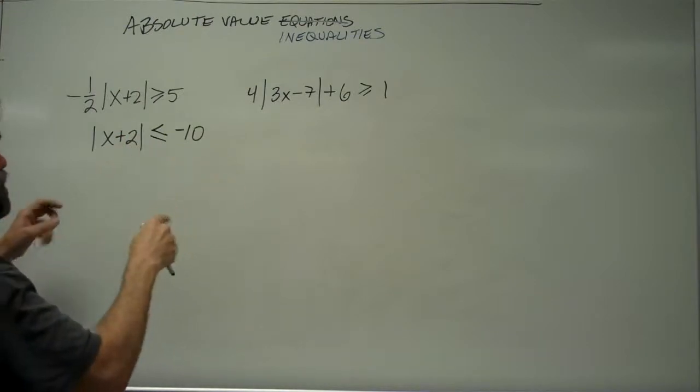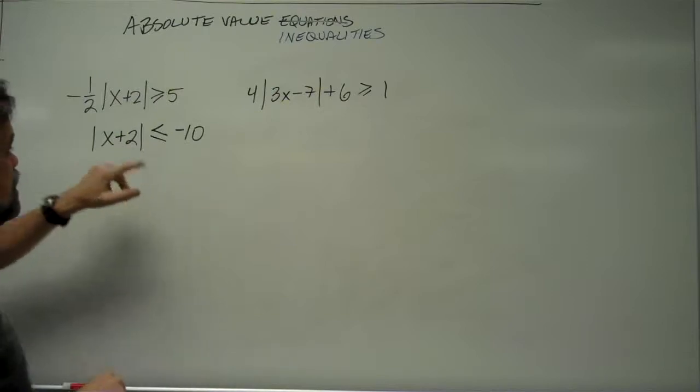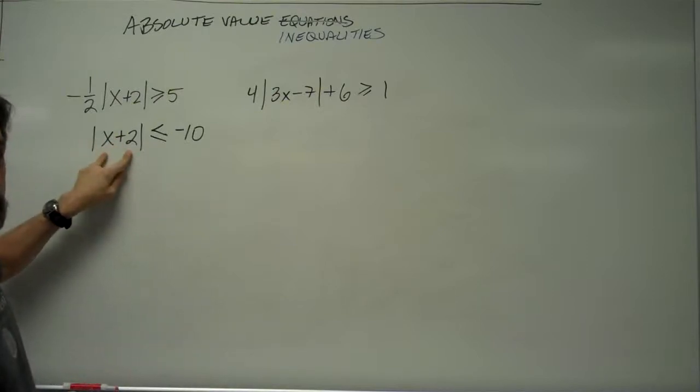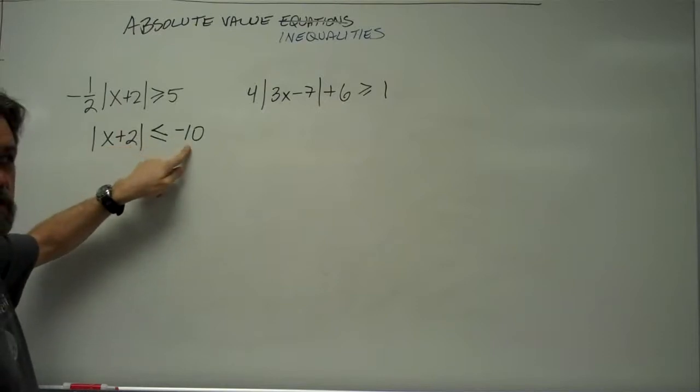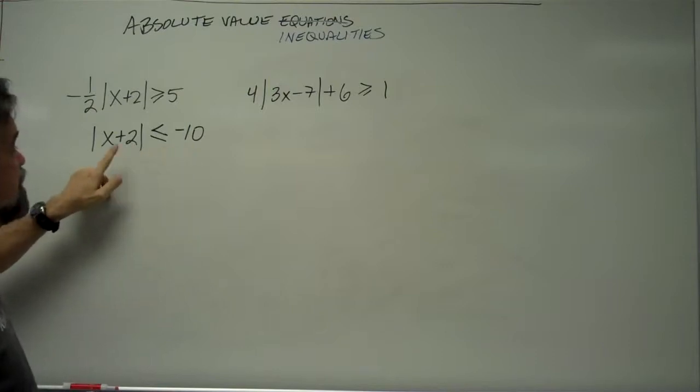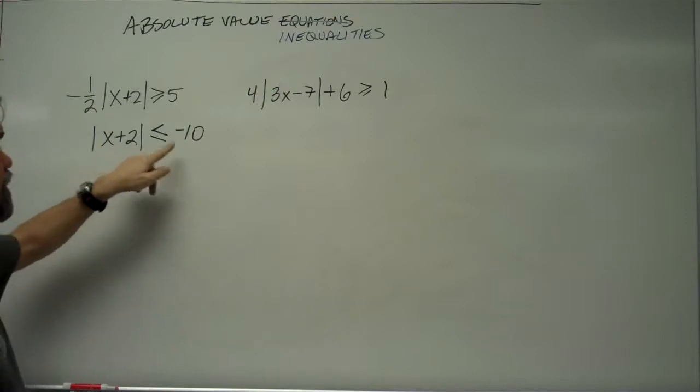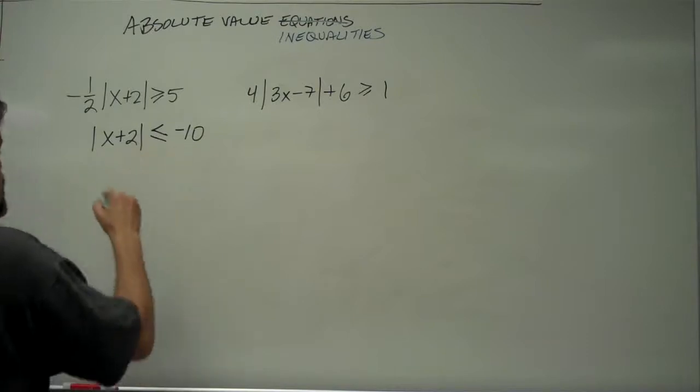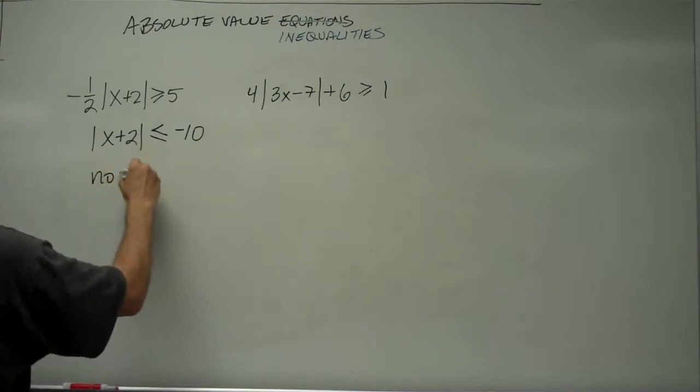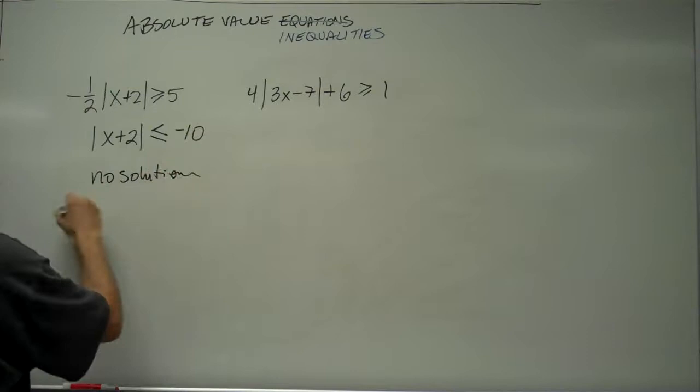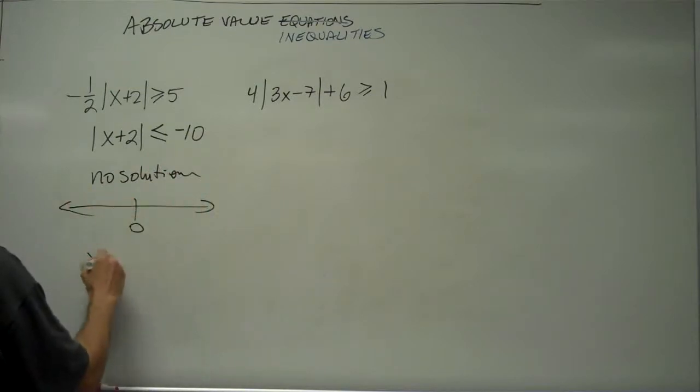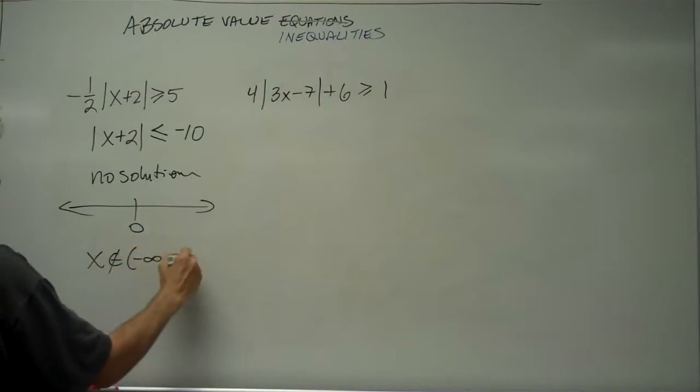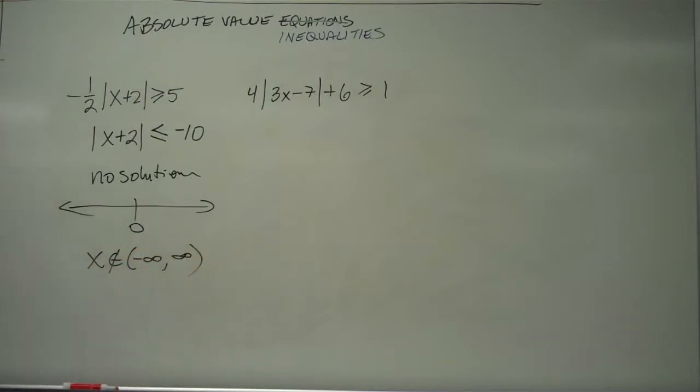And I would normally think, okay, that means it's going to be between two numbers, except stop. Absolute value, always positive. Less than or equal to negative 10? No, it's not. The lowest this can possibly be is 0. It can't be less than or equal to negative 10, so we just stop and say, okay, no solution, empty number line, and x cannot be found anywhere between negative infinity and infinity.